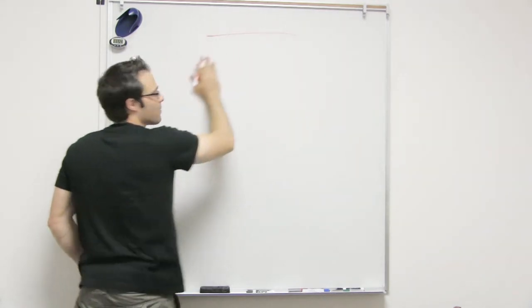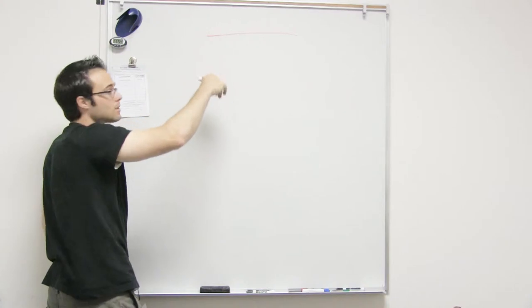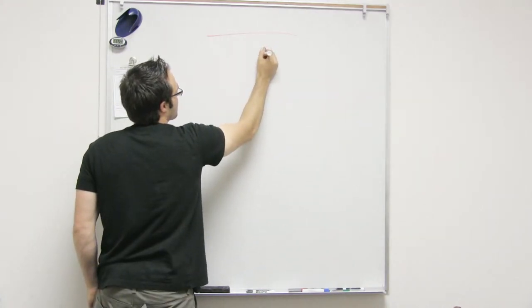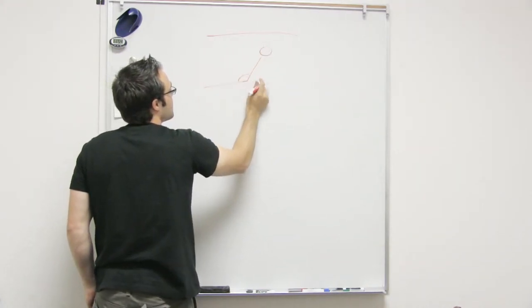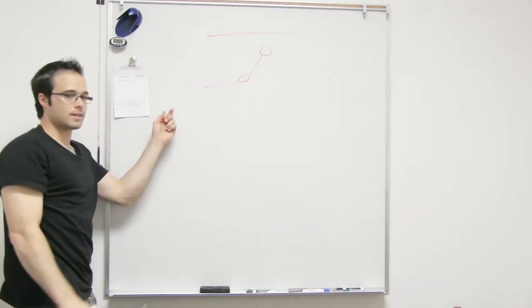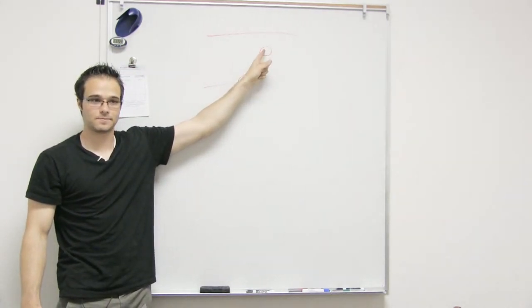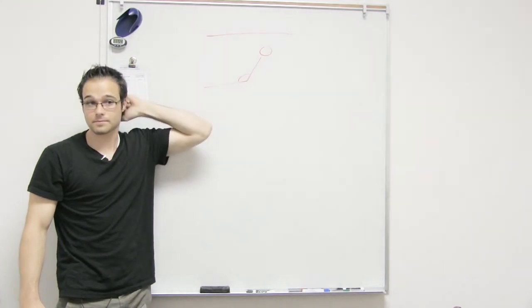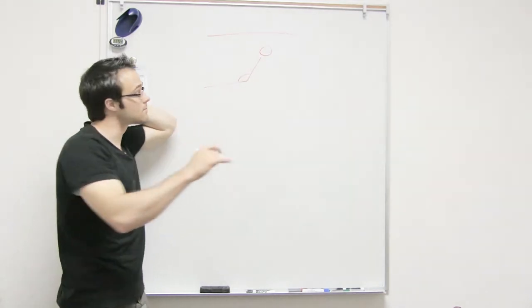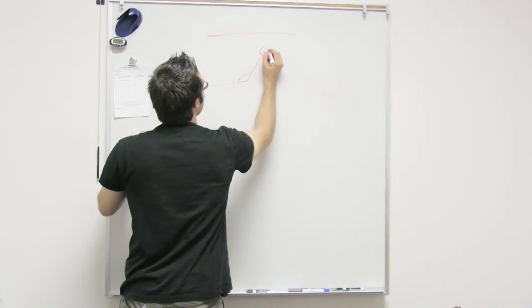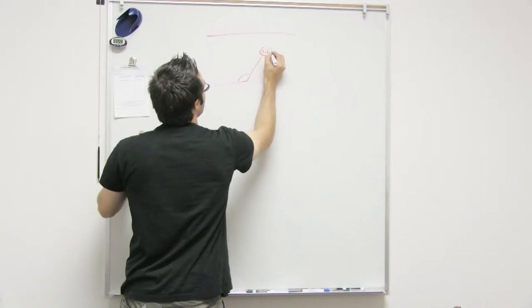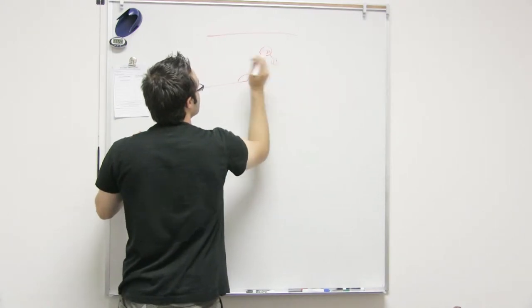So I'm just going to draw this line that represents our actin with all the circles, and here's our myosin head. What I didn't draw before is that there is something already attached to this head—ADP with another phosphate hanging off the side. Okay, that's right.